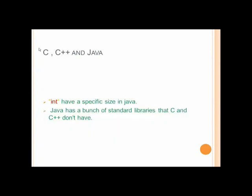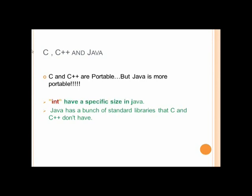C, C++ and Java. C and C++ are portable, but Java is more portable than C and C++. For an example, int have a specific size in Java.